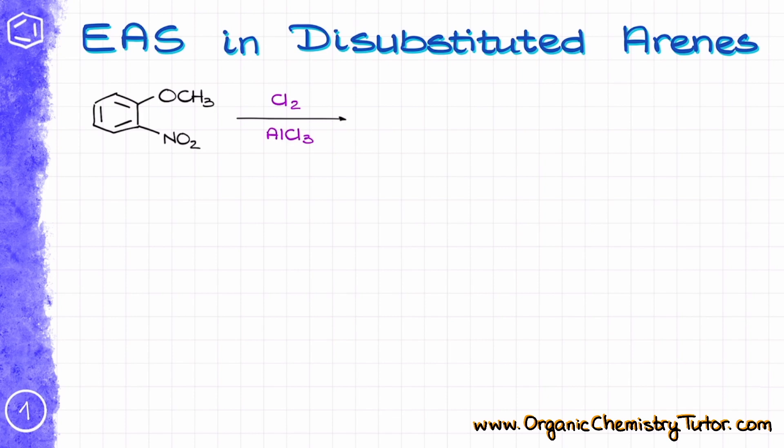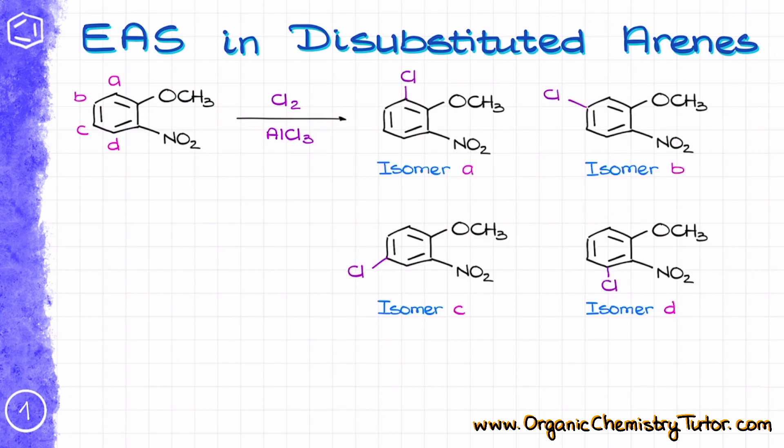Let's start by looking at this compound and this reaction over here. As our molecule is not symmetrical, there are four possible places where we can perform the substitution, giving us four possible products. The question is which one is going to be our major product — to answer that you'd probably need to draw the resonance structures for all the intermediates, or our sigma complexes, and go from there.